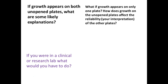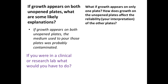We come back next week and look at these plates. If growth appears on both of our unopened plates, that's not good. Likely explanations: they were contaminated. How? The food source, the petri dish, or the person making the prep. In a clinical or research lab, since our negative controls didn't come out negative, we couldn't trust the rest of the experiment — we'd have to do it again. But this is a teaching lab, so we use it as a teaching moment.